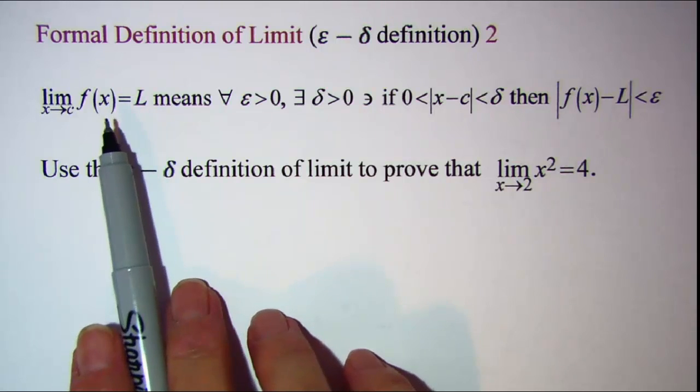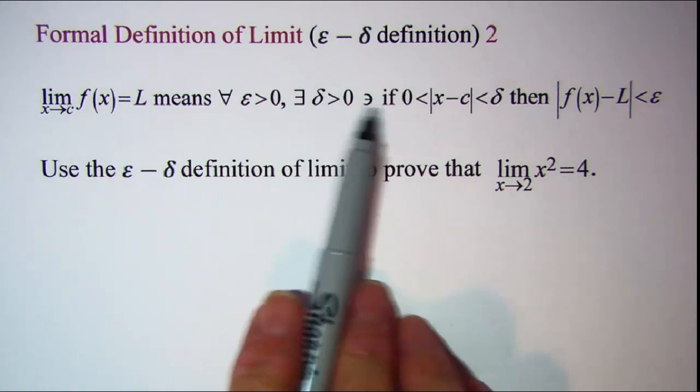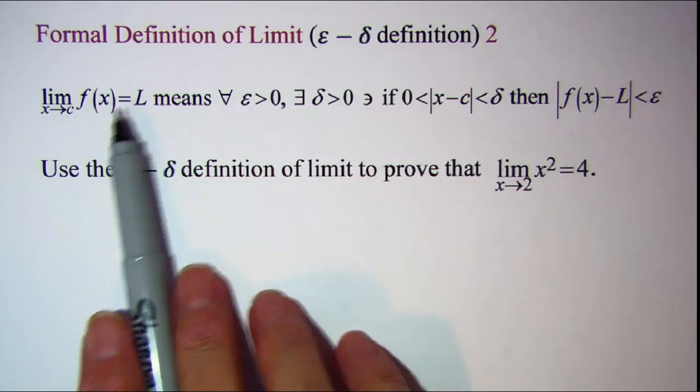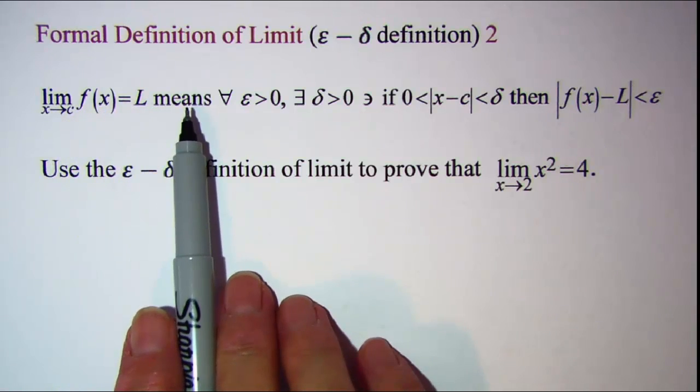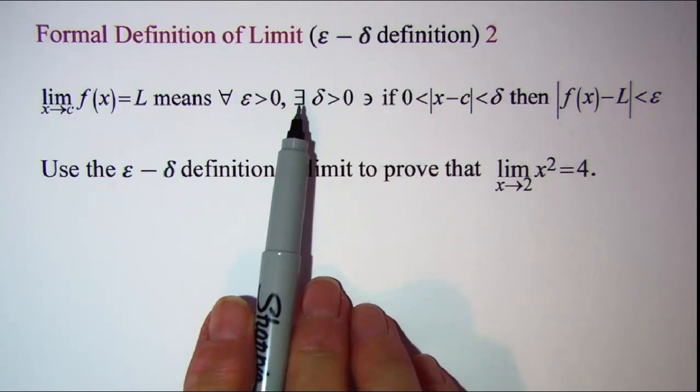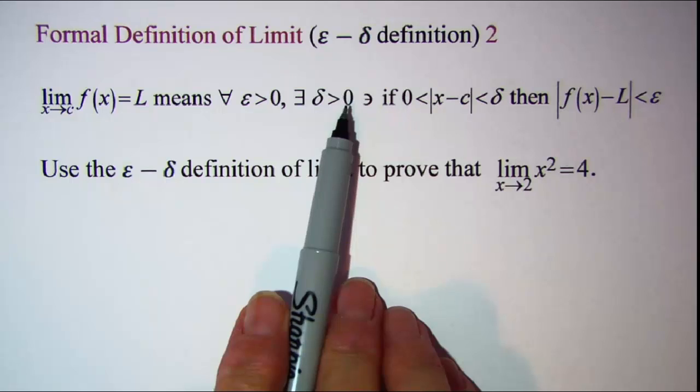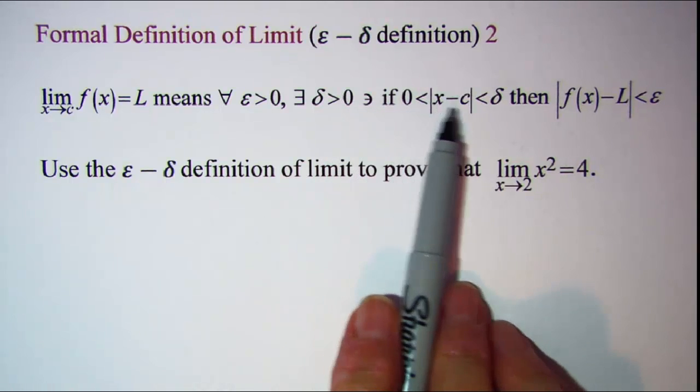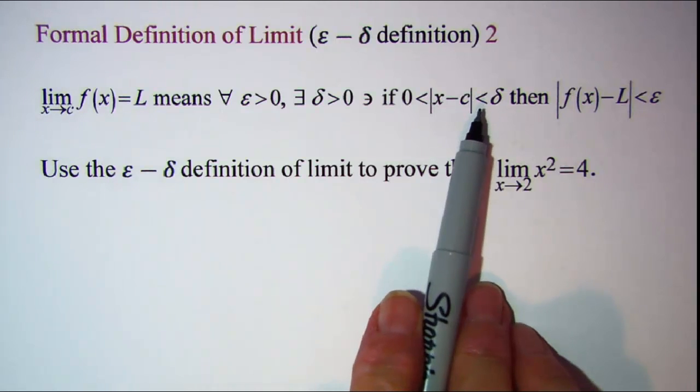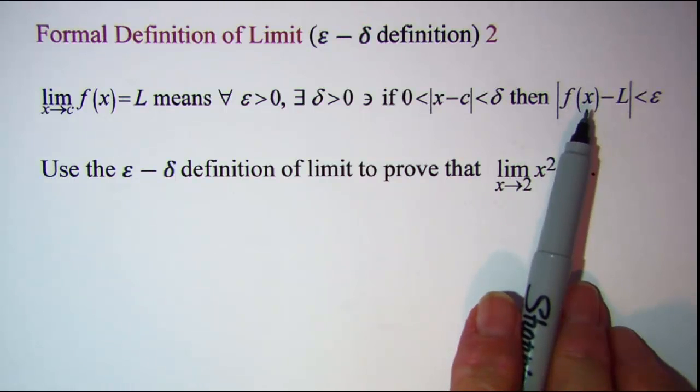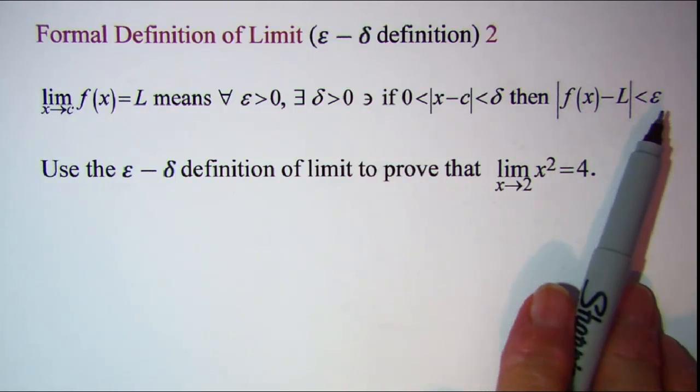Our formal definition of limit is given up here. The limit as x approaches c of f of x is equal to L means that for every epsilon greater than 0, there exists a delta greater than 0 such that if 0 is less than the absolute value of x minus c, which is less than delta, then the absolute value of f of x minus L is less than epsilon.